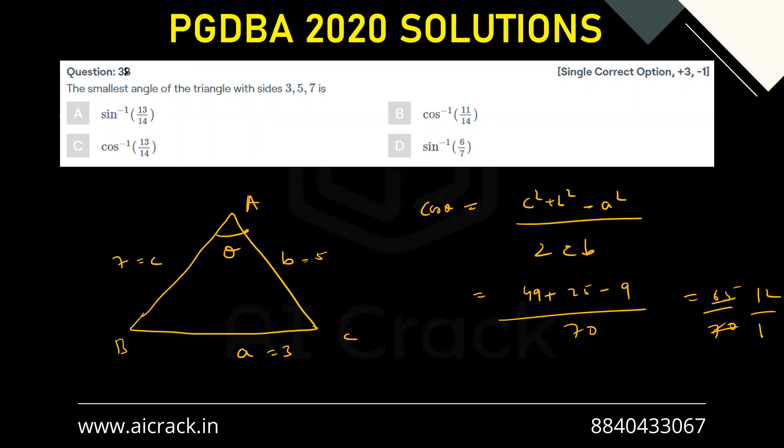So dividing by 5, we get 13 by 14. Therefore, theta is cos inverse 13 by 14. So C is the correct answer.